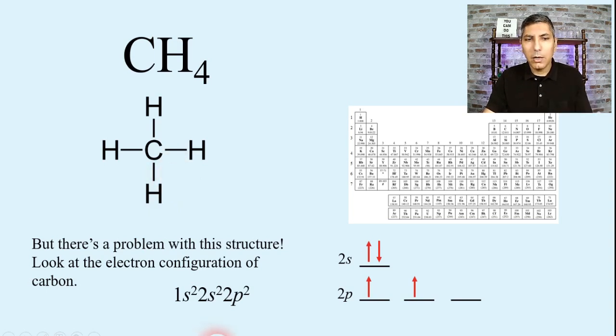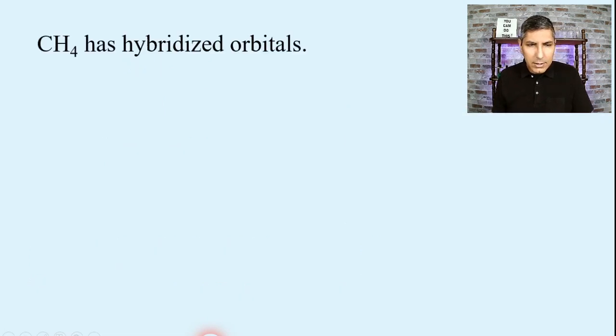Well, the atom carbon undergoes what's called hybridization. Now, what does that mean? Well, CH4 has hybridized orbitals. So in the carbon atom, we start out with, you know, these four orbitals.